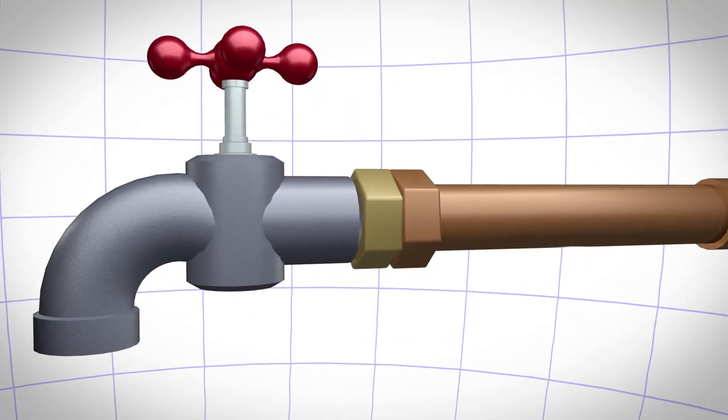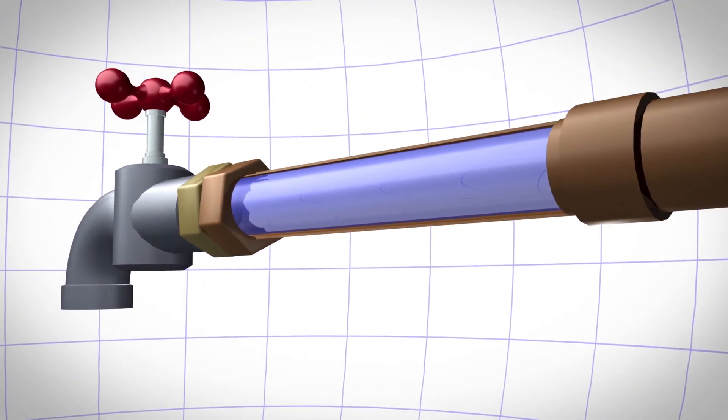Let's look inside the pipes to see what's going on. When a valve or faucet is opened, water begins to flow.